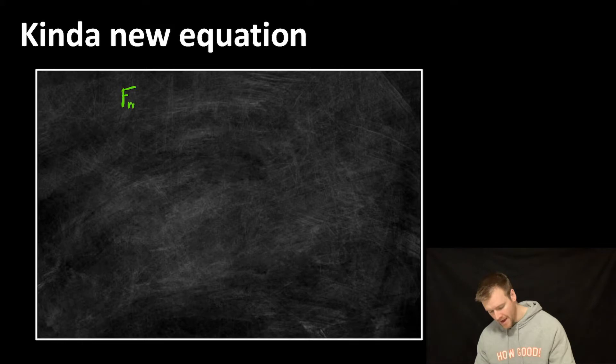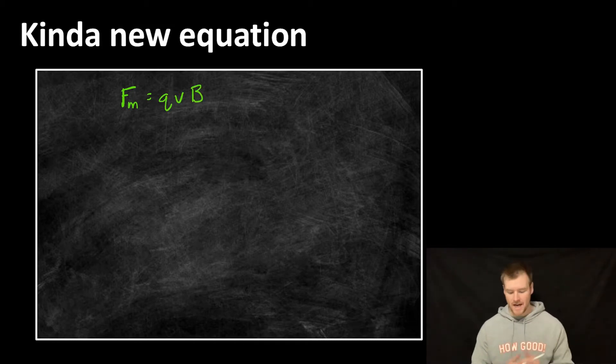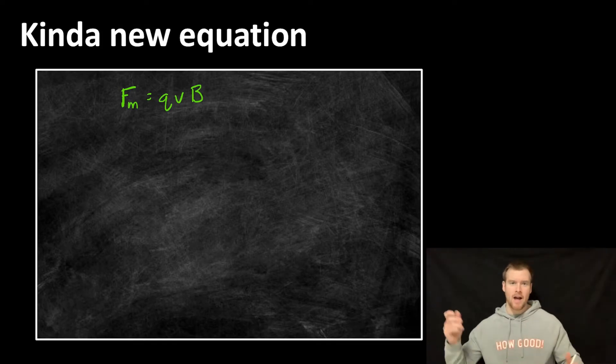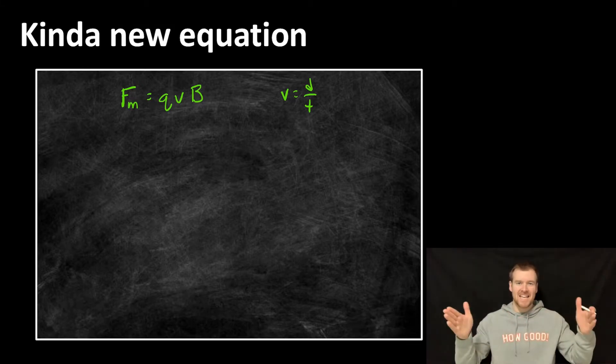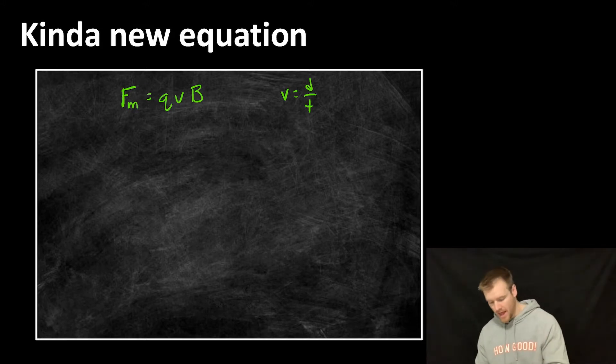Before we had FM, the force from the magnetic field was equal to Q times velocity times the magnetic field strength or magnetic induction. Now we're just going to look at velocity. We're having the velocity of those charges going through the wire. You may recall from other physics lessons that velocity is equal to distance over time. Now, instead of looking at distance, it's going through a wire. So we're going to call that distance the length of a wire. I'm just going to represent that with L over T.